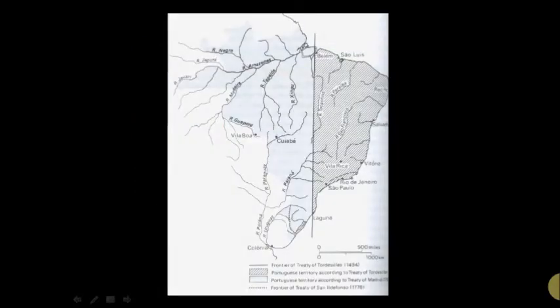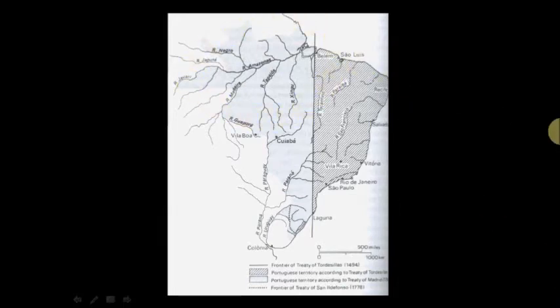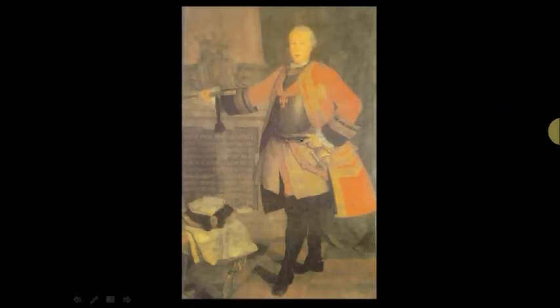As we said, Pombal transforms Portugal. He does more than that — he transforms its relationship to Brazil. He is interested in changing the relationship between Portugal and Brazil and in exploiting portions of Brazil that had traditionally been considered peripheral. An example of this is the manner in which the Amazon becomes an important part of his plans. In terms of this, he sends his brother — Francisco Xavier de Mendonça Furtado — to serve as the governor general of the Amazon in the 1750s. His brother is sending back reports to Pombal about what's going on in Brazil, particularly in relation to the Treaty of Madrid and the role that Jesuit missionaries have with the Indians in the Amazon region.